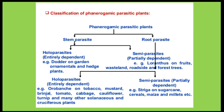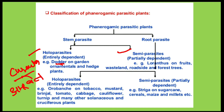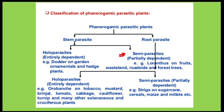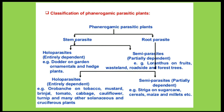These are of two types: holoparasites and semi-parasites. Holoparasites are totally dependent on the host plant for nutrition and do not make their own food — examples are Dodder, Cuscuta, or Amarbel. Semi-parasites infect the stem but only take water and nutrients from the host; they make their own food — like Loranthus.